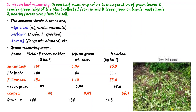Sun hemp yield of green matter is 152 quintals per hectare. The nitrogen content on a green weight basis is 0.43%, and nitrogen added per hectare is 84 kg per hectare. For dhaincha, 144 quintals of green matter are present, with 0.42% nitrogen, adding 77.1 kg per hectare of nitrogen.